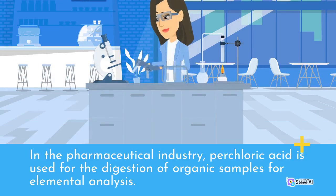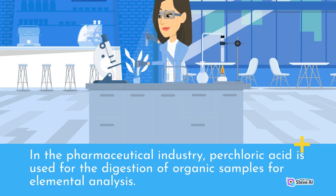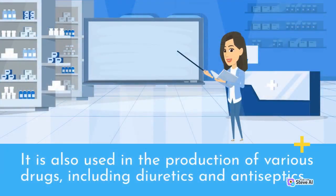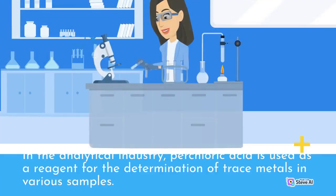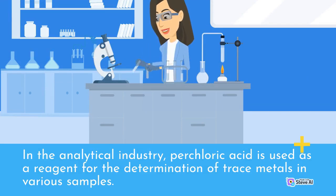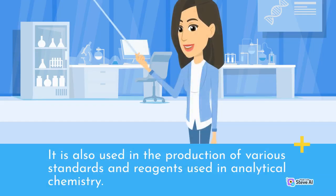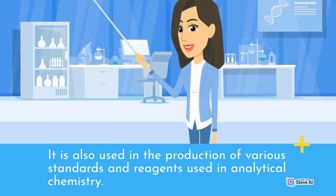In the pharmaceutical industry, perchloric acid is used for the digestion of organic samples for elemental analysis, and also in the production of various drugs including diuretics and antiseptics. In the analytical industry, it is used as a reagent for the determination of trace metals in various samples, as well as in the production of standards and reagents used in analytical chemistry.